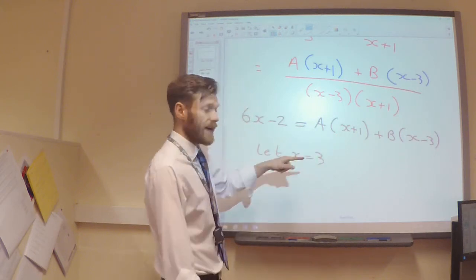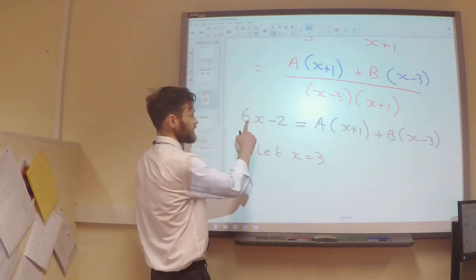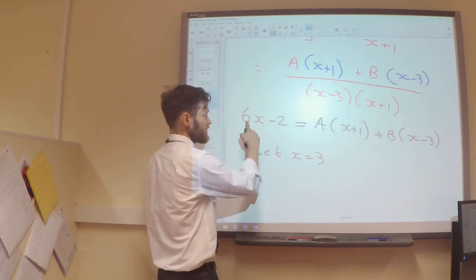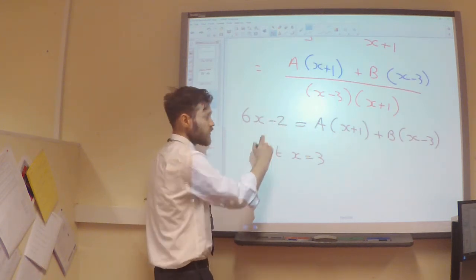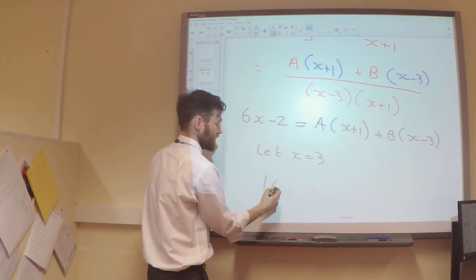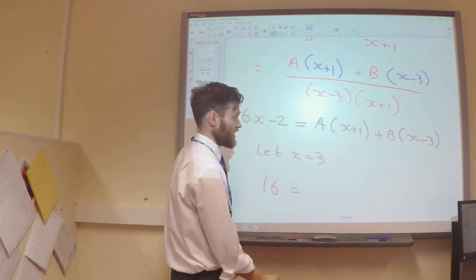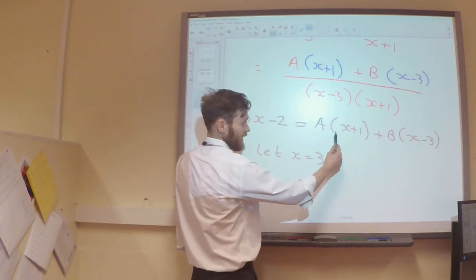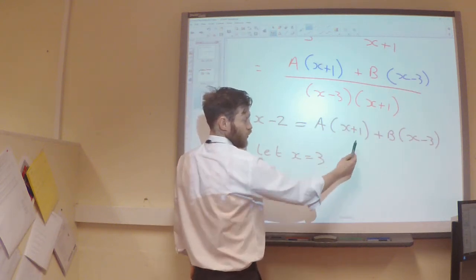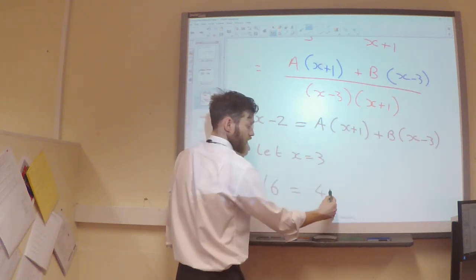So, when x is 3, 6 times 3, take away 2, so 6 times 3 is 18, take away 2, so I will have 16 on the left hand side. Over on the right hand side, I've got A multiplied by 3 plus 1, so I've got 4A.